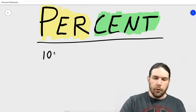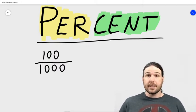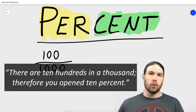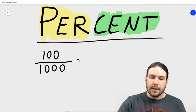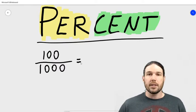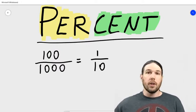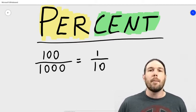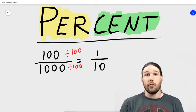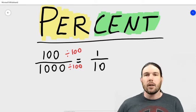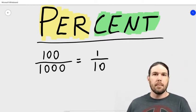What Mr. Turkentine said is that there are ten hundreds in a thousand, therefore you have had ten percent. The idea is really good — what he means is that there are ten hundreds in a thousand, so if you have a hundred of the Wonka bars, that means you have one tenth of the total. If you don't know how to do that right off the top of your head, the mathematical way is to notice that we can divide both the top and the bottom of this fraction by one hundred. We're allowed to do that because if we do it on top and bottom, it has no effect on the value.